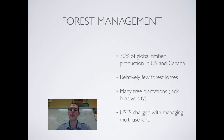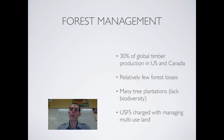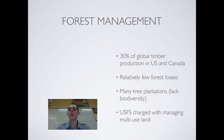30% of global timber production is in the U.S. and Canada, and both countries have done a pretty good job managing forests with relatively few forest losses — forest cover in America has actually increased over recent history. One problem is many tree plantations, where growing one type of tree leads to low biodiversity and vulnerability to disease and insects. The U.S. Forest Service manages forest land but faces a tough balance between sustainable conservation and commercial multi-use interests.